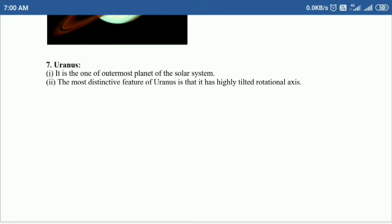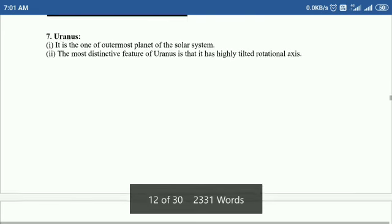Next one is Uranus. Uranus is the outermost planet of the solar system. The most distinctive feature of Uranus is that it has a highly tilted rotational axis.